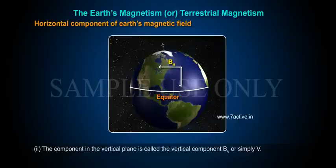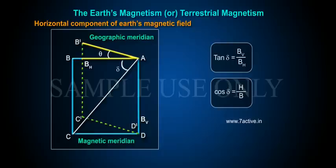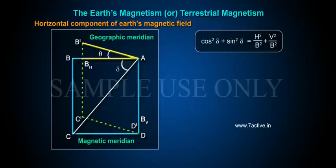As is clear from figure: tan δ is equal to BV by BH, cos δ is equal to H by B, sin δ is equal to V by B.